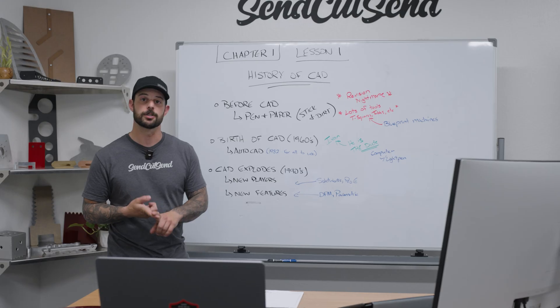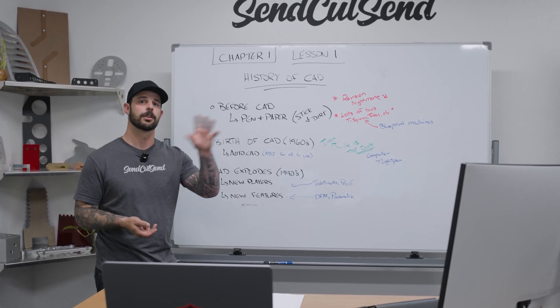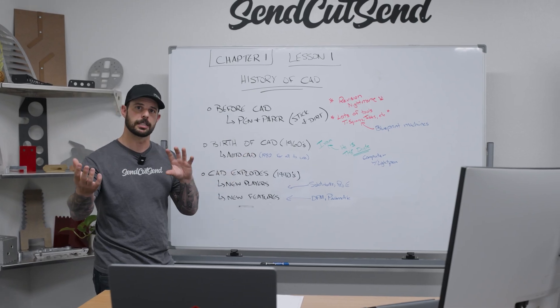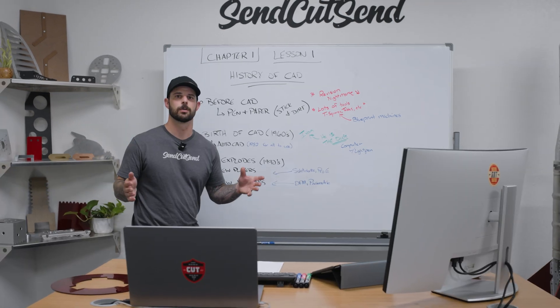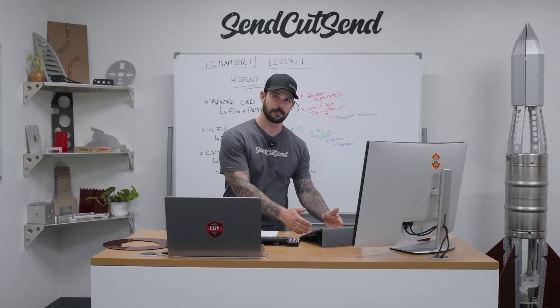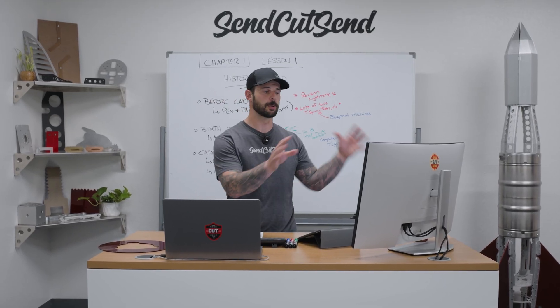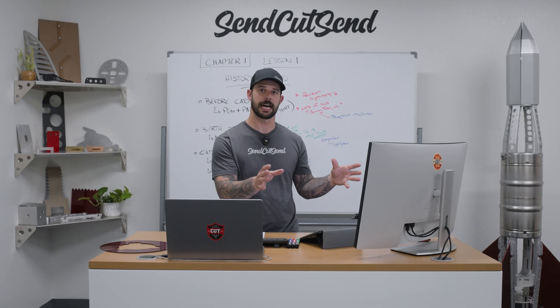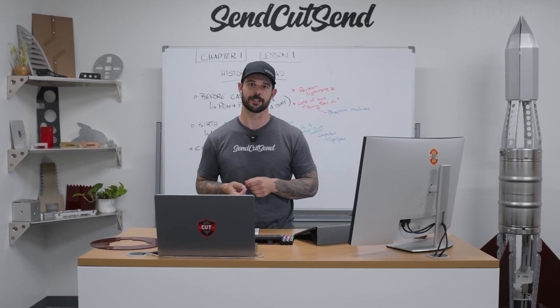Those new features included DFM — design for manufacturing — and parametric design. We'll talk more about parametric design in upcoming chapters, but it's the idea that drawings manipulate with your changes to them; it kind of self-draws itself. To recap: why is this all important? At the very beginning we had the basic building blocks of sketching on pen and paper, and that's exactly how we're going to structure chapter one — starting with the basic idea of putting your idea onto a sketch in CAD. In the next lesson, we'll talk about 2D and 3D, and dive into why 2D is the most important thing to learn first.